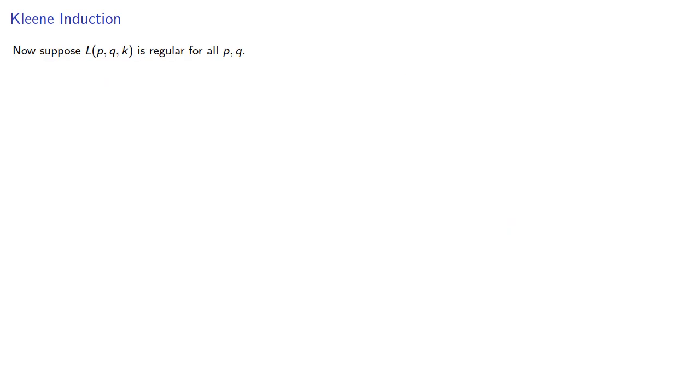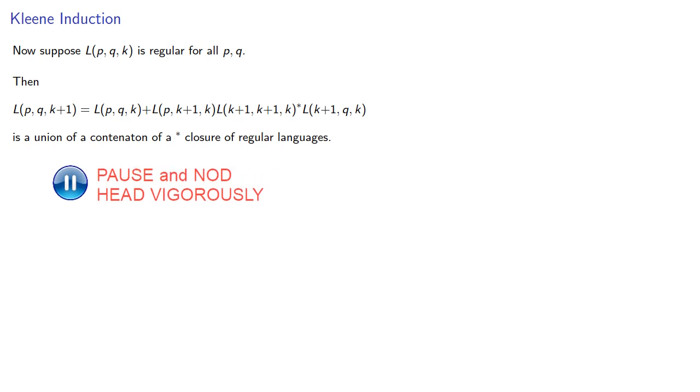So now suppose L(p,q,k) is regular for all p and q. Then the next one is a concatenation of a star closure of regular languages. So it will also be regular, and so L(p,q,k) will be regular for all k.